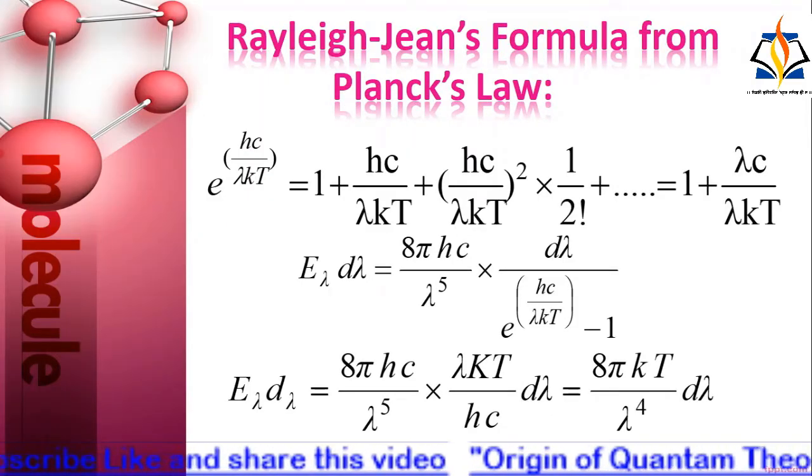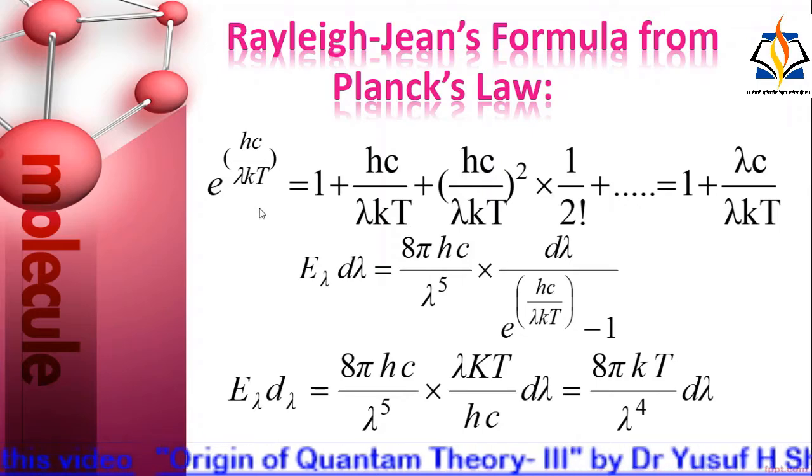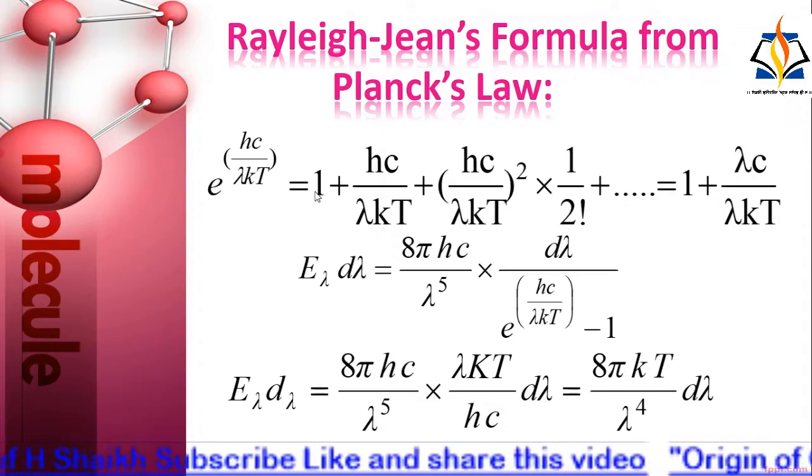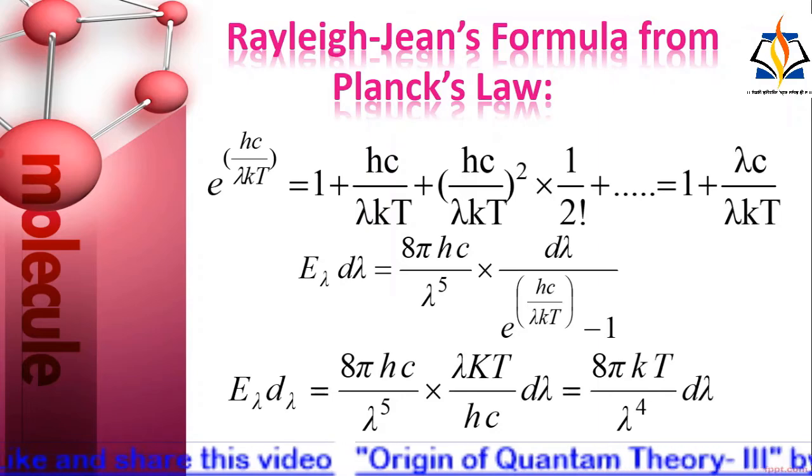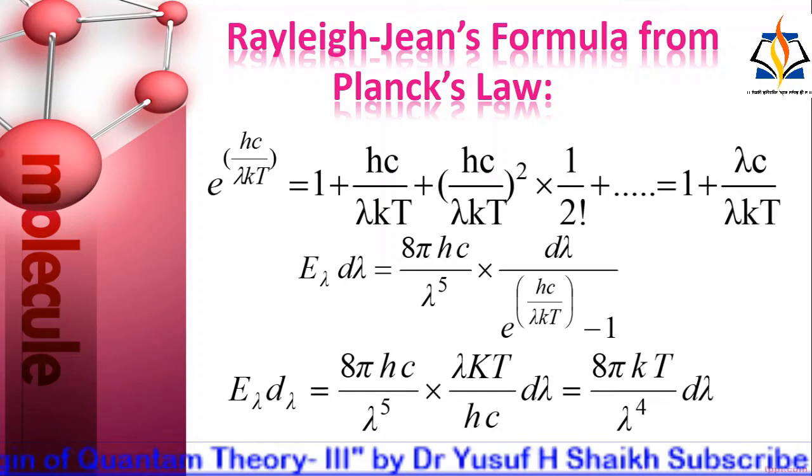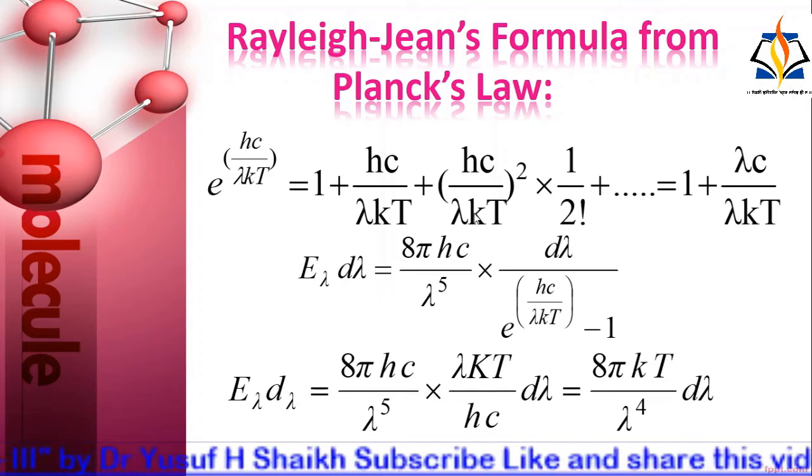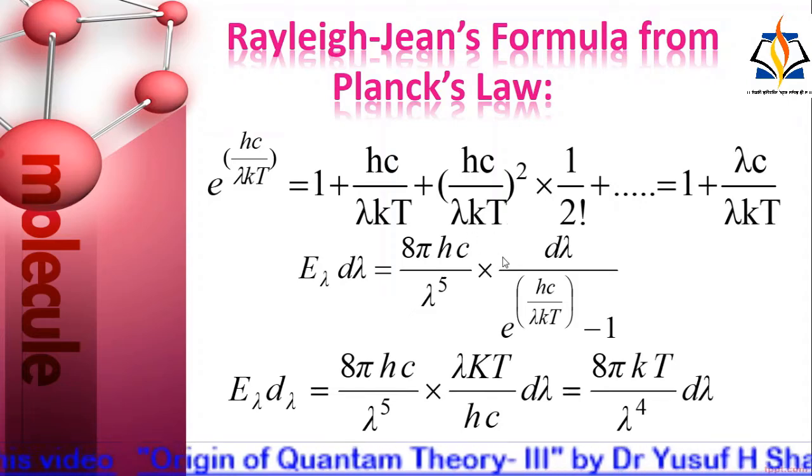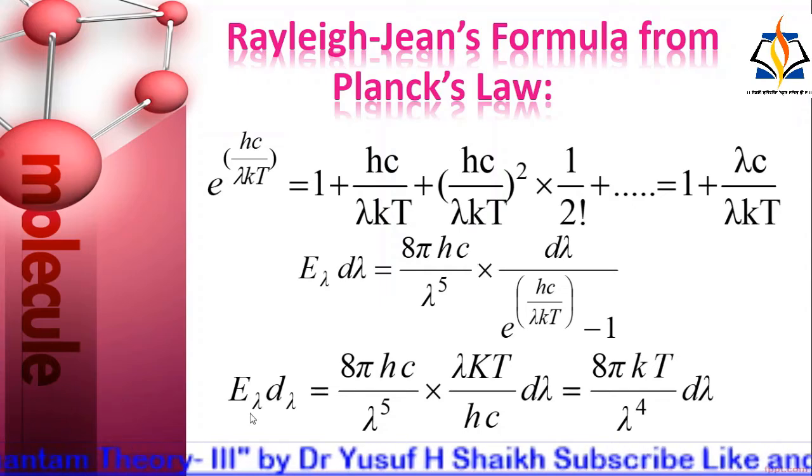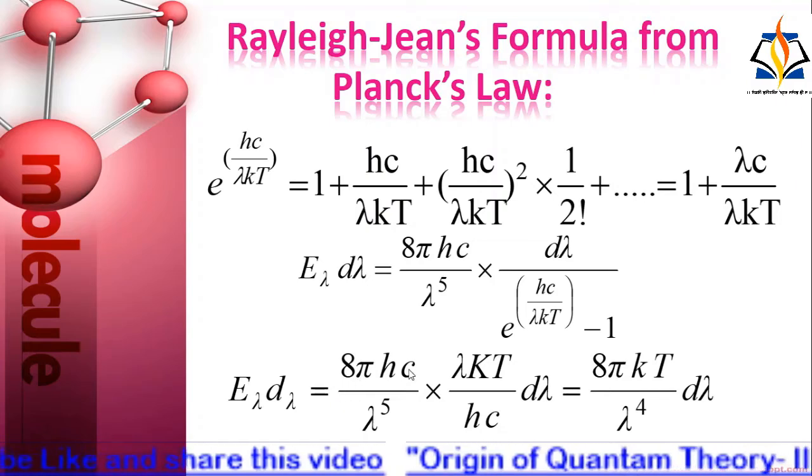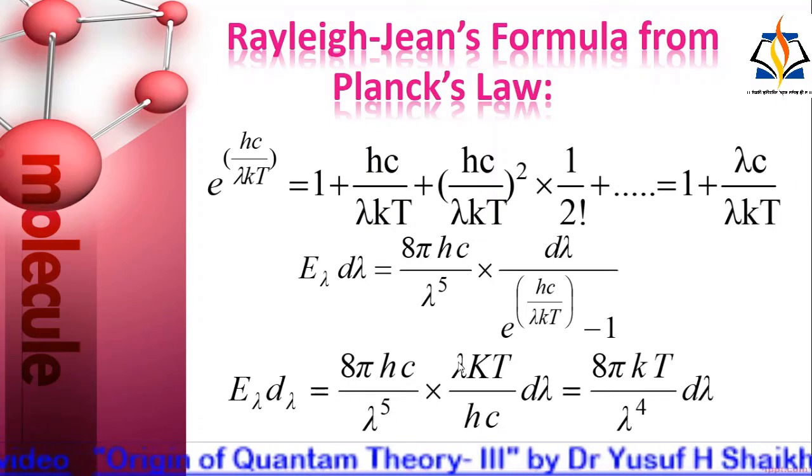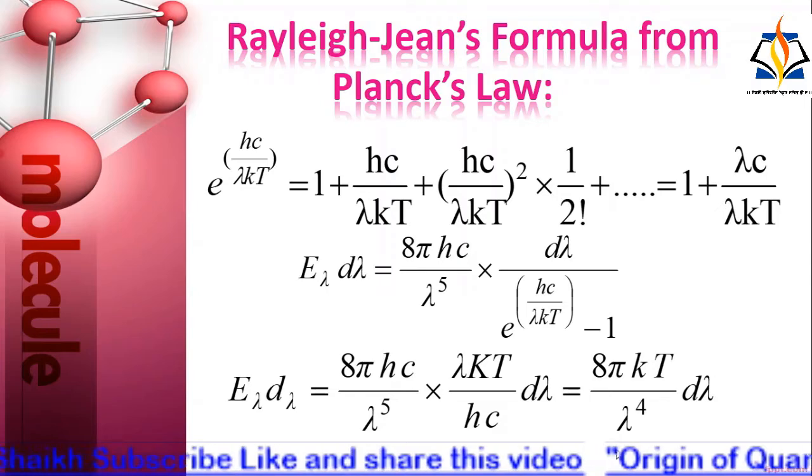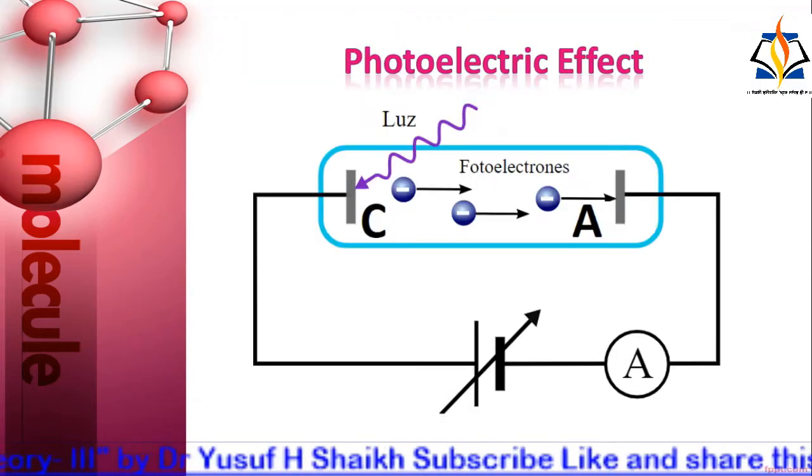Rayleigh-Jeans formula from Planck's law: At higher temperature or high wavelength, lambda T is large and hc upon lambda kT is small, so that higher order terms can be neglected. We obtain E lambda d lambda equals 8 pi kT upon lambda raised to 4 into d lambda.